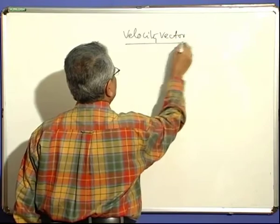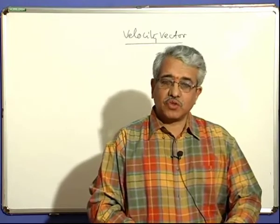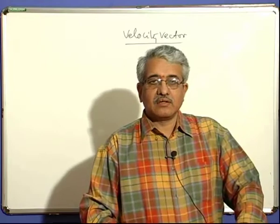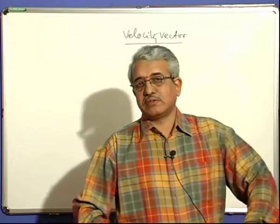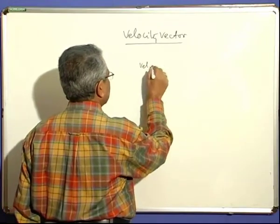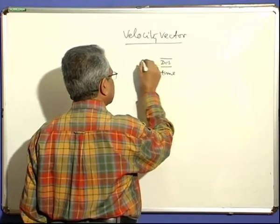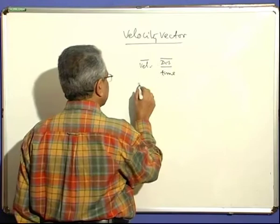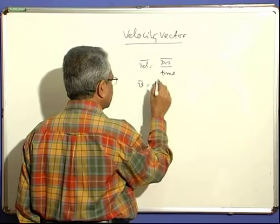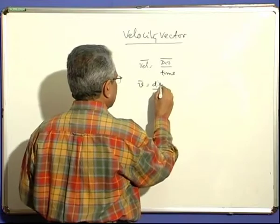We will try to understand what this velocity vector means in more detail before we go into further discussions, because we should know how to represent velocity both in magnitude and direction whenever a general problem is to be specified. You all know what is meant by velocity — velocity is nothing but displacement by time taken. This is also a vector quantity. So we write the velocity as dx by dt, where x is the displacement.